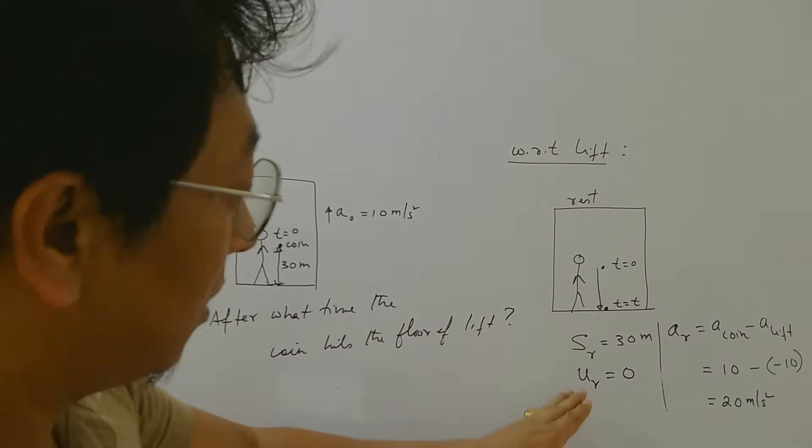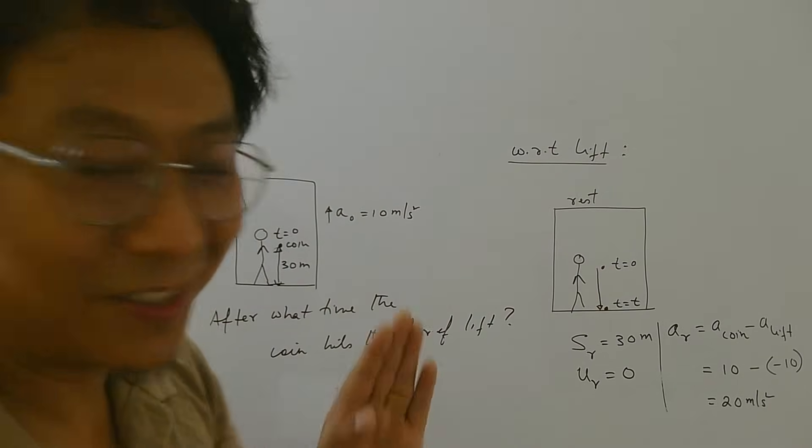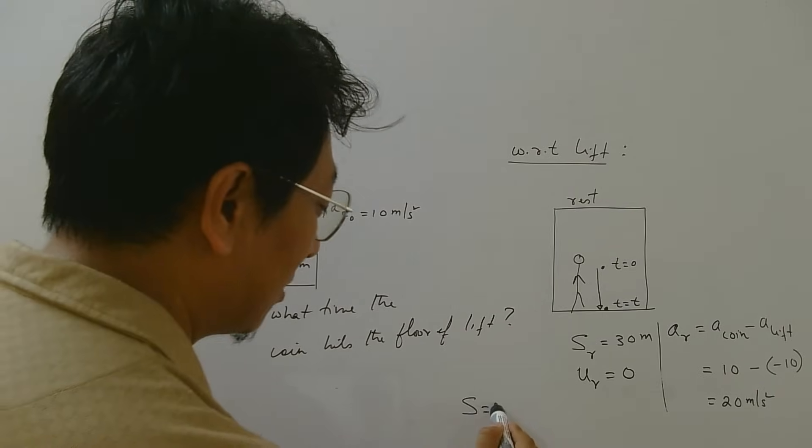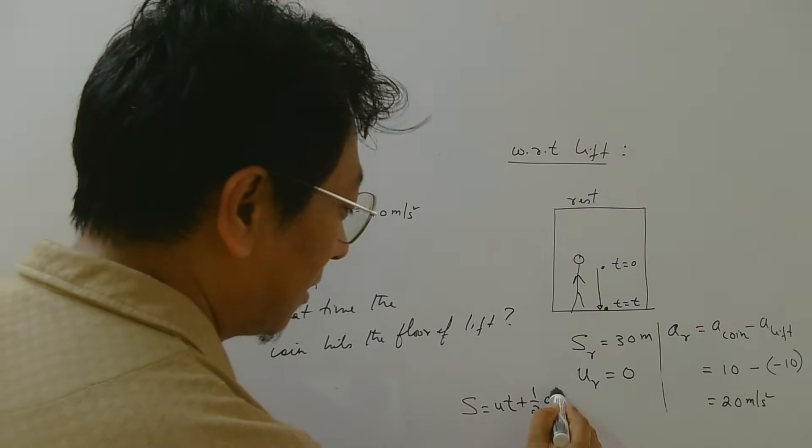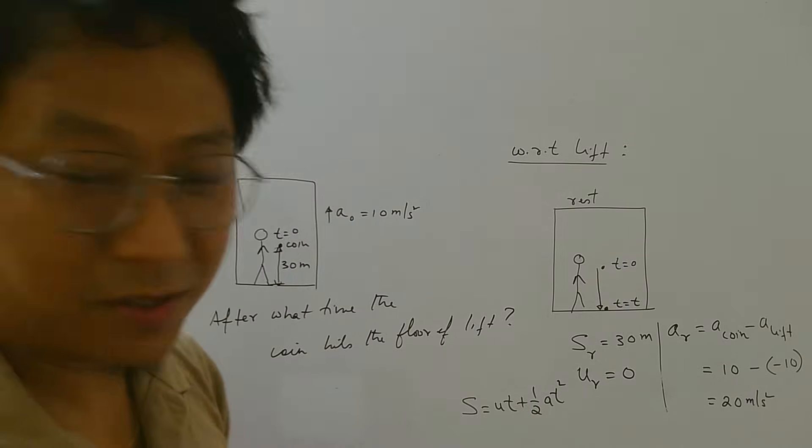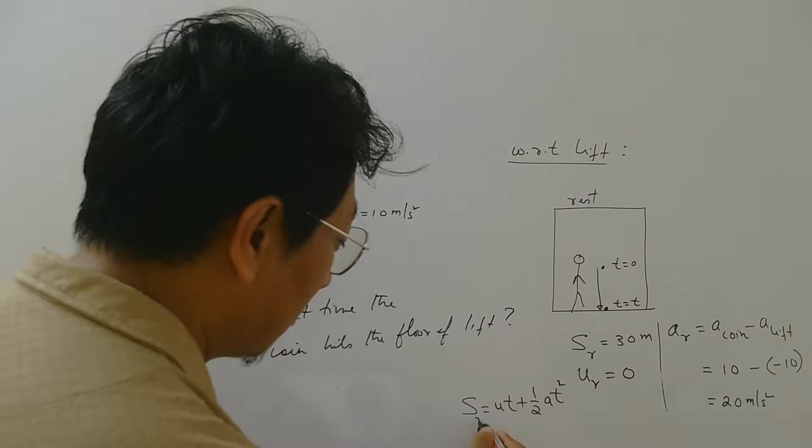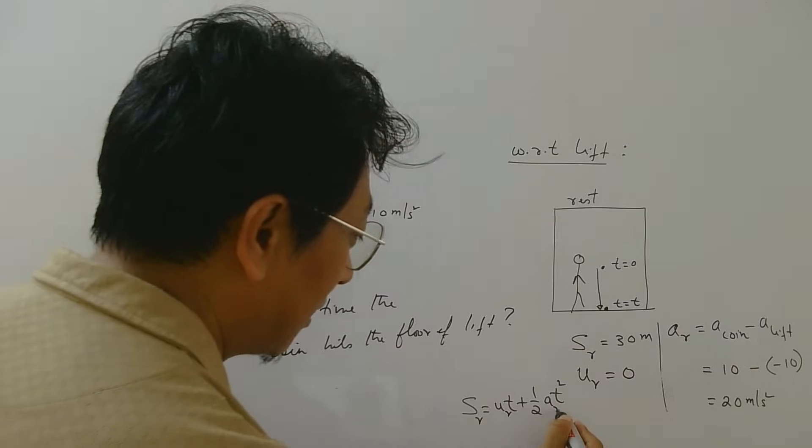So after knowing the displacement, initial velocity, acceleration, we can find time taken by using the formula s equal to u t plus half a t square. But since we are applying this formula with respect to lift, everywhere we have to understand it is relative quantities.